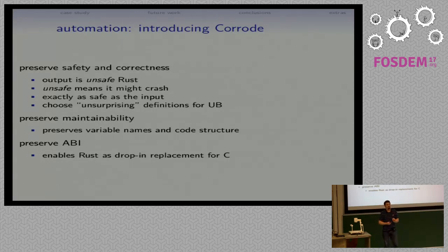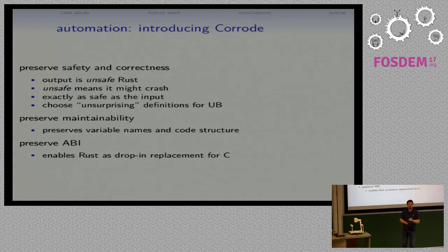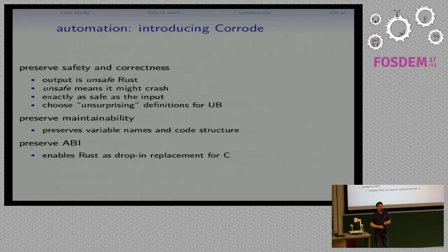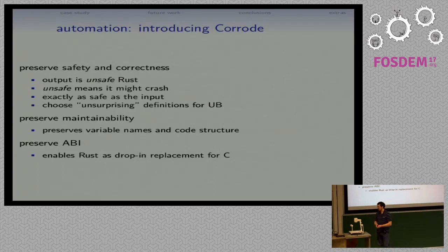Some particular principles that Corrode follows. Corrode aims to preserve safety and correctness. Given that we're starting from C source, which is not particularly safe and often not particularly correct, preserving its existing level of safety and correctness is not a very high bar. So the output of Corrode is not safe Rust — it is Rust in the unsafe subset of the language. That means it might crash in spite of the usual promises that Rust provides around memory safety, but it is exactly as safe as the input was.